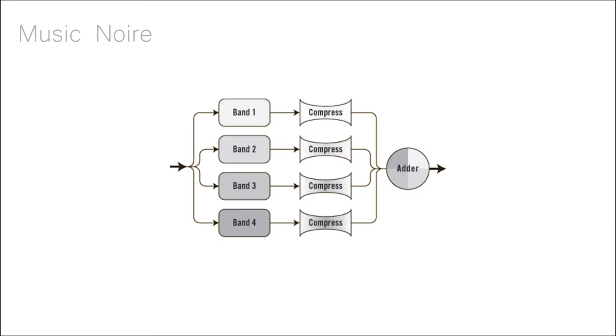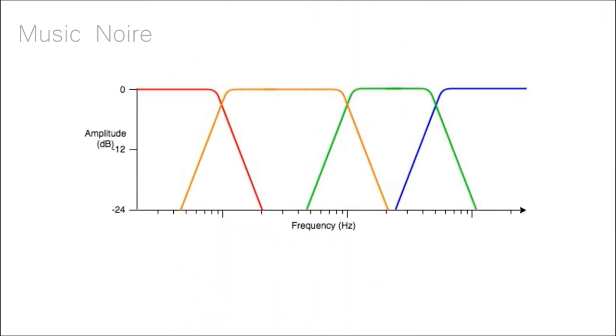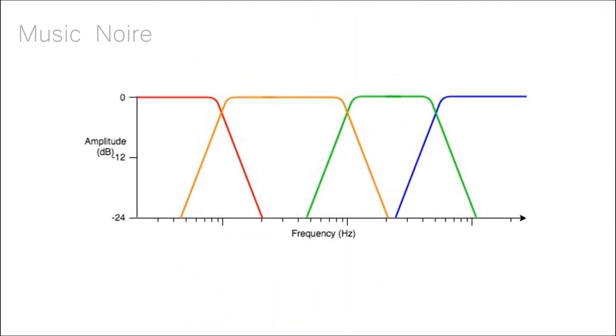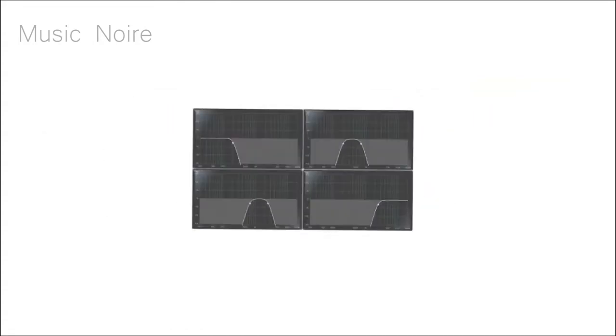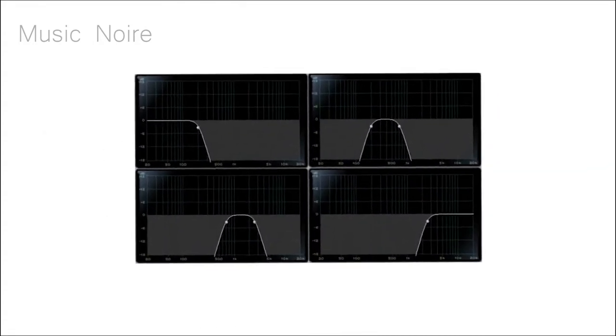Multi-band compressors, on the other hand, allow you to address certain frequency bands of an audio source. For instance, you can compress low frequencies while keeping high frequencies intact, or vice-versa. As another example, let's say the top end of your snare is excessively harsh. Using normal compression to fix it will cause it to lose punch, but multi-band compression will definitely perform better.